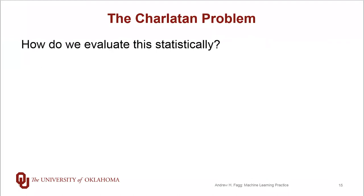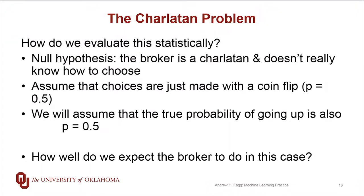How do we evaluate this statistically? What a statistician would say is that we have a null hypothesis, and that null hypothesis is that the stock broker actually doesn't know what they're doing. This person is a charlatan, and there are a lot of those out there. Say this broker is just going to make choices based on a coin flip, and we'll make an assumption that P is one half. We're also going to make a naive assumption that the true probability of going up or down is also 0.5.